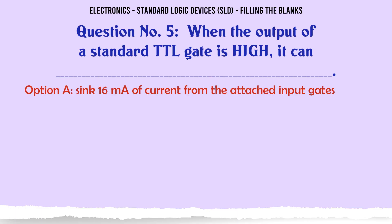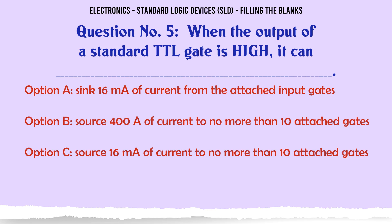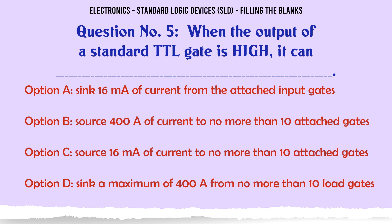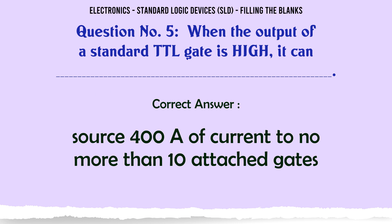When the output of a standard TTL gate is high, it can: A sink 16 mA of current from the attached input gates. B source 400 μA of current to no more than 10 attached gates. C source 16 mA of current to no more than 10 attached gates. D sink a maximum of 400 μA from no more than 10 load gates. The correct answer is: source 400 μA of current to no more than 10 attached gates.